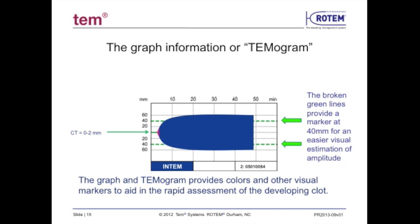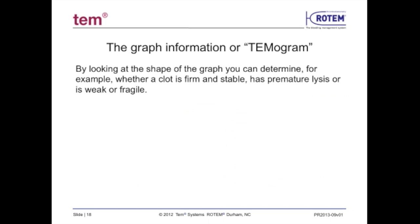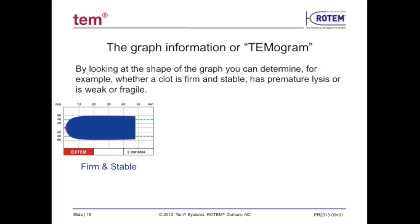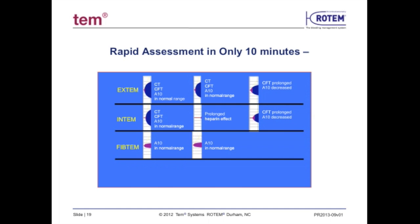The blood clot tracing is broken down by parameter with color visual indication of different phases of clot development. The CT parameter is colored green, indicating an amplitude generation of less than 2 mm. The CFT represents the phase of fibrin polymerization, or rate of clot formation, measured in the range of 2 to 20 mm, indicated in pink. Beyond the 20 mm point, the increasing amplitude demonstrating further clot firmness is displayed in dark blue. Using visual cues, you can determine whether a clot is firm and stable, unstable, or demonstrates premature lysis, or is simply weak.